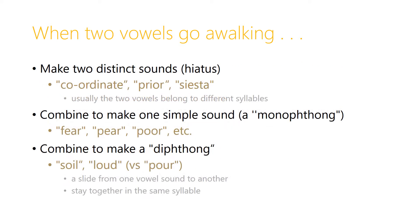There are three different ways that two vowels can combine to make a sound. The first is called hiatus, and this is where two vowels continue to make two distinct sounds, like in the English words 'coordinate', 'prior', or 'siesta'. Usually the two vowels belong to different syllables, and so they each are pronounced separately.